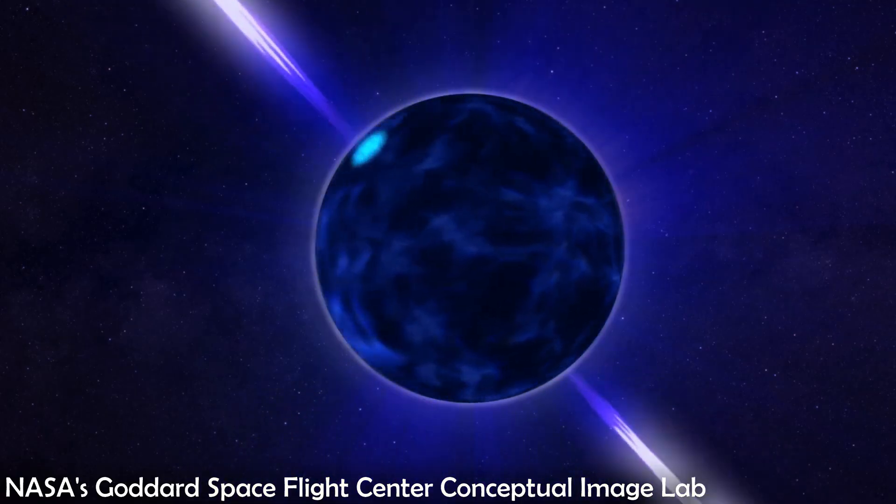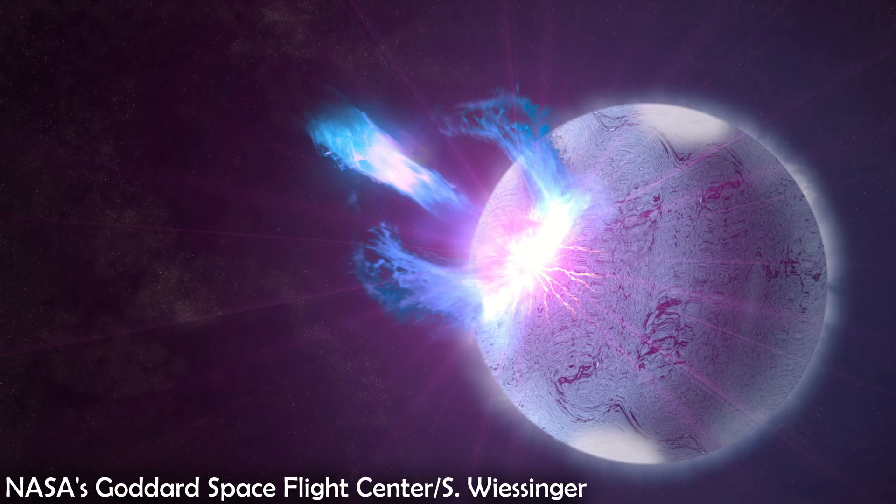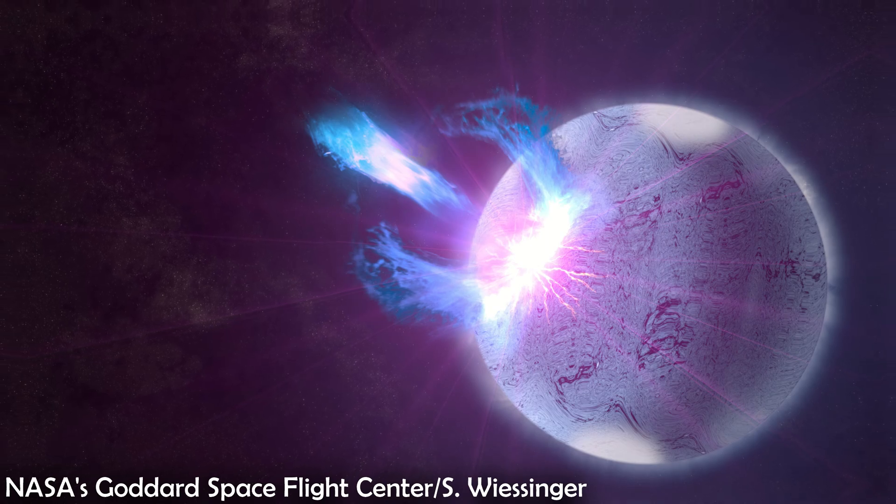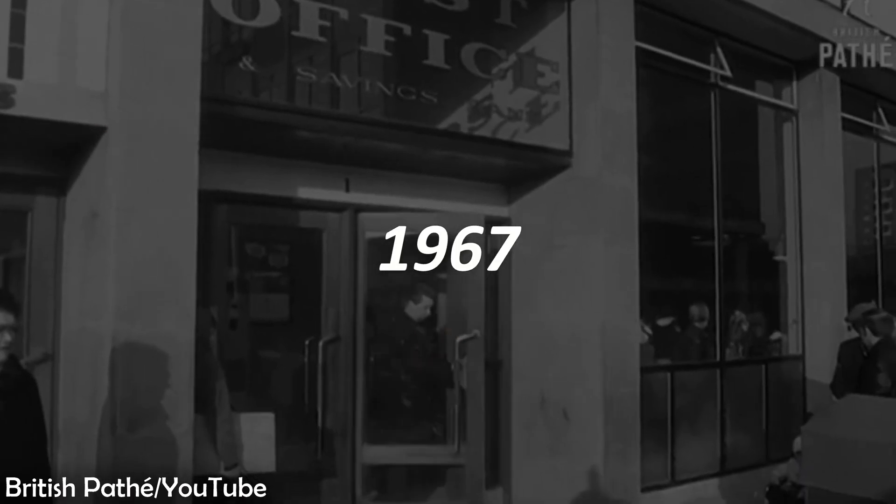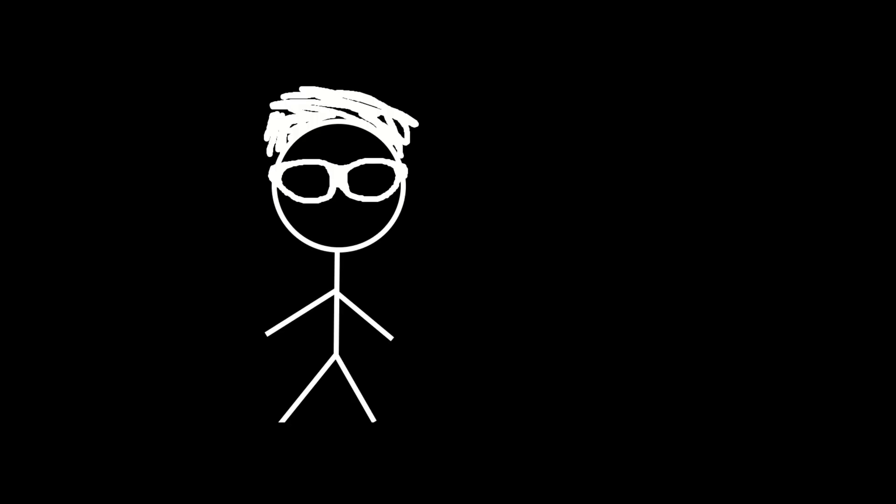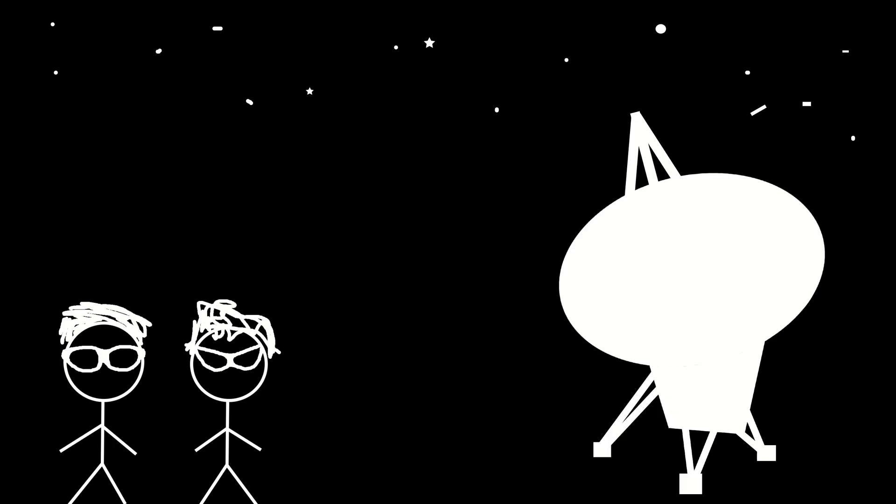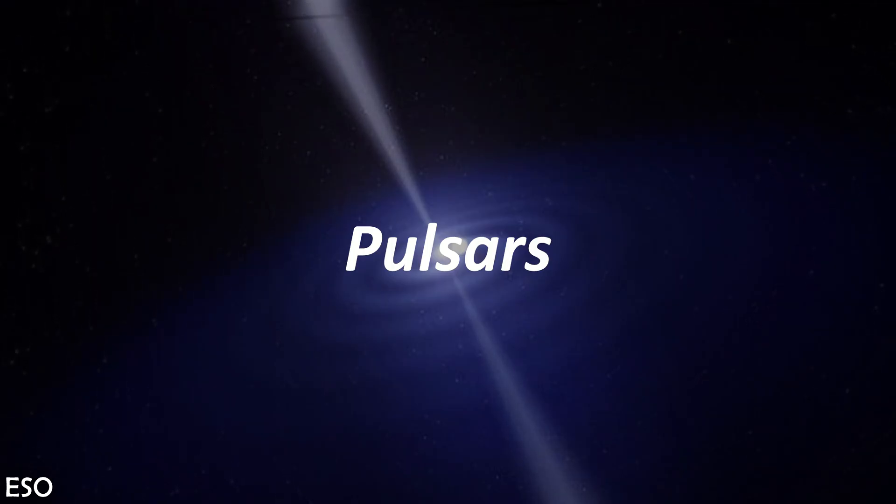There are two types of neutron stars: pulsars and magnetars. To understand pulsars, first we have to go back to 1967. Two astronomers named Anthony Hewish and Jocelyn Bell were observing the sky using a radio telescope when they found a strange light pulsing in the sky. This was actually a pulsar. So what is a pulsar?